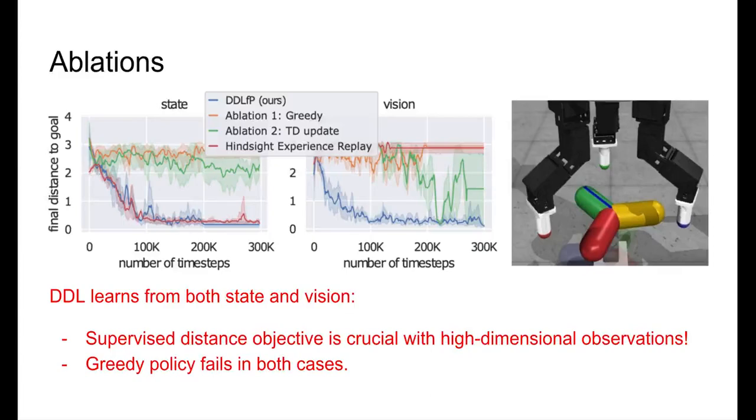We repeated the previous experiment in a controlled simulation setting to highlight the components that make DDL successful. Most importantly, the supervised learning objective is crucial when we don't have access to the low-level state of the system. Also, minimizing the distance greedily fails in both cases, unlike using the distance as a reward function.